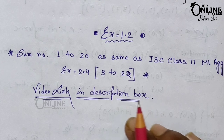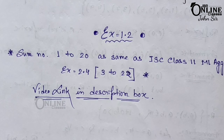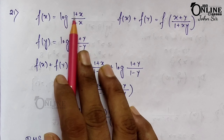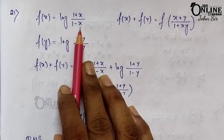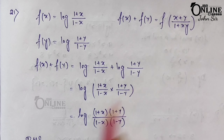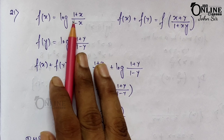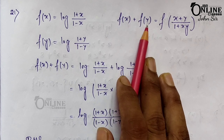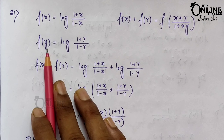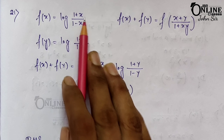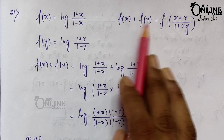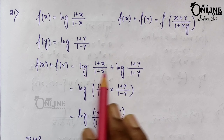Now I'm going to start from sum number 21. Here in sum number 21, if f(x) equals log((1+x)/(1-x)), show that f(x) + f(y) equals f of this expression. So the value of f(x) is this. Now you have to find the value of f(y) — just replace x by y, so instead of x write y, giving (1+y)/(1-y).